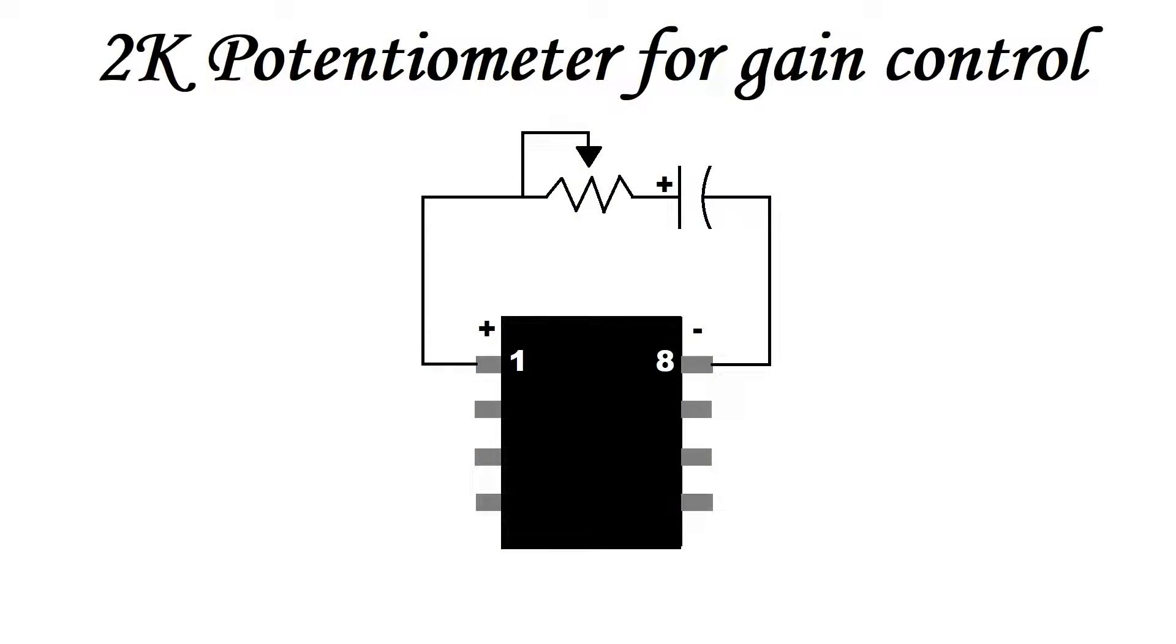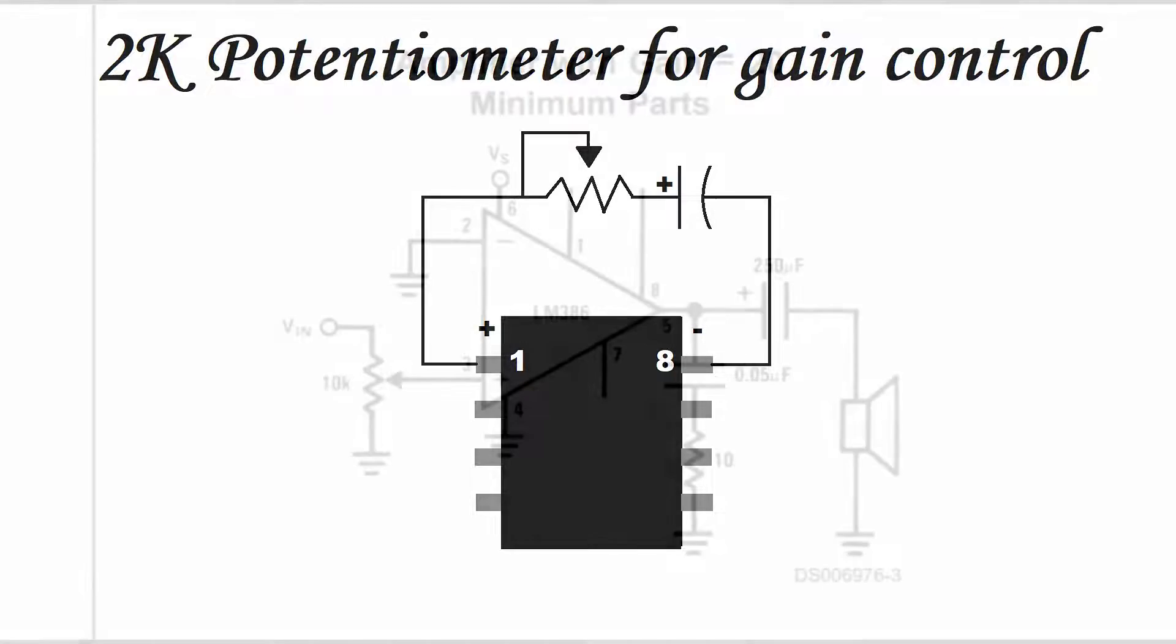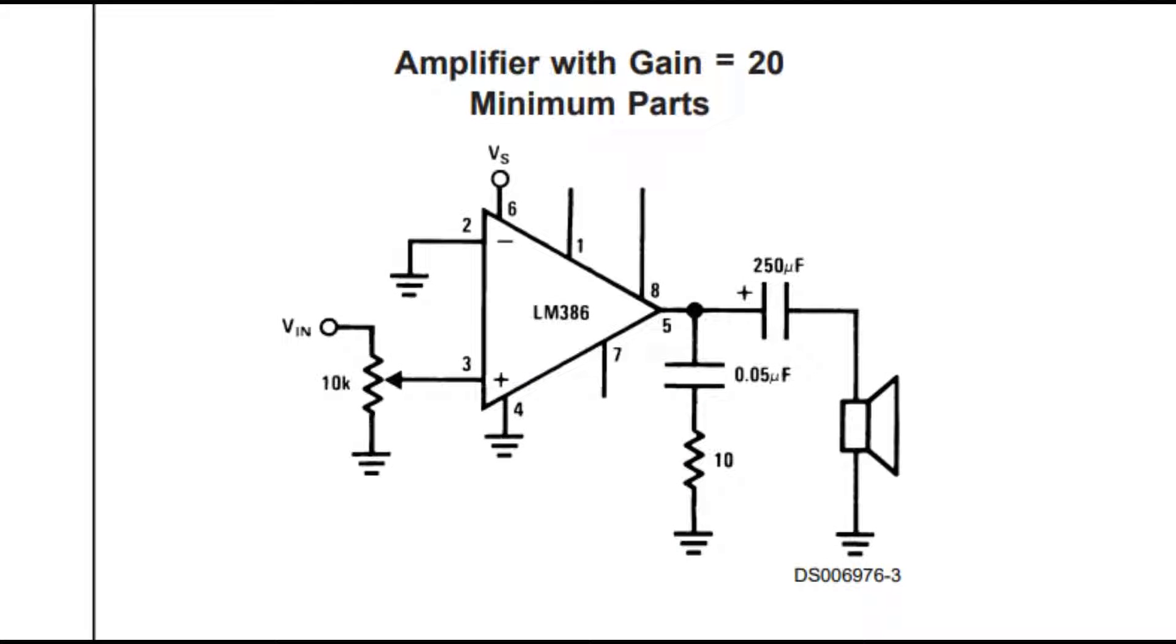Now a 5K potentiometer is at least twice as big as what is needed here. I would normally use a 2K potentiometer here, but I didn't have any of those on hand when I made the video. So using a 2K potentiometer here in place of a fixed resistor will give you control over the full range of gain that this circuit is capable of producing, from 20 to 200.